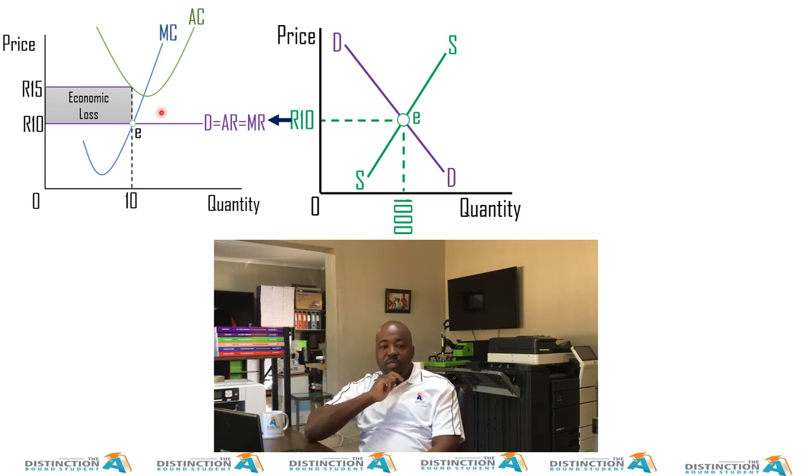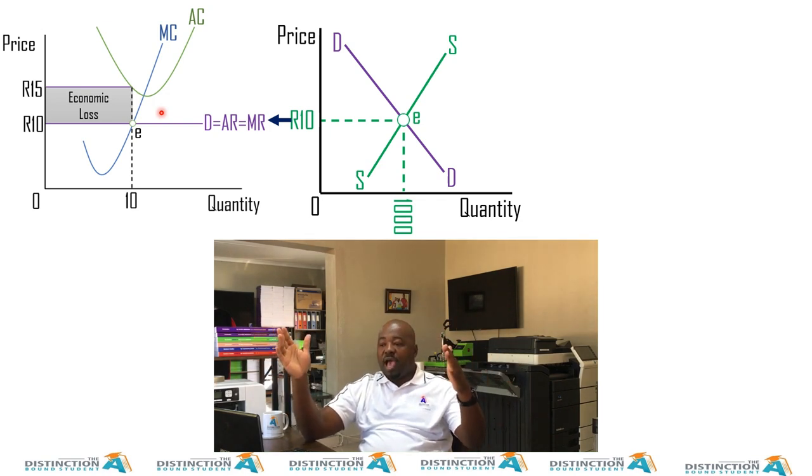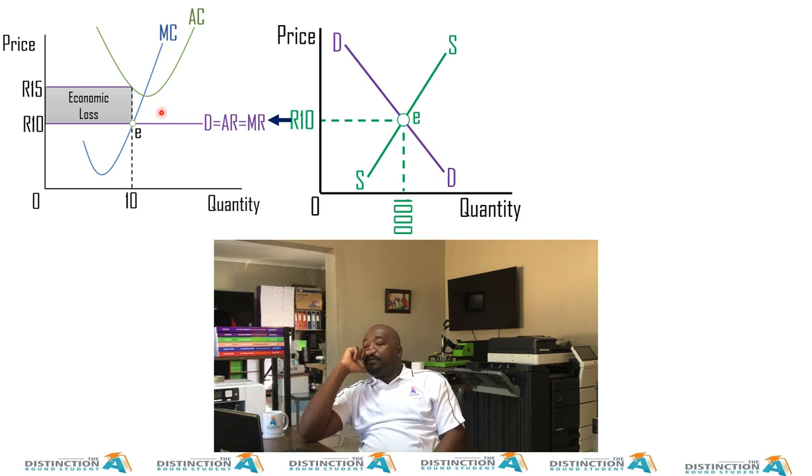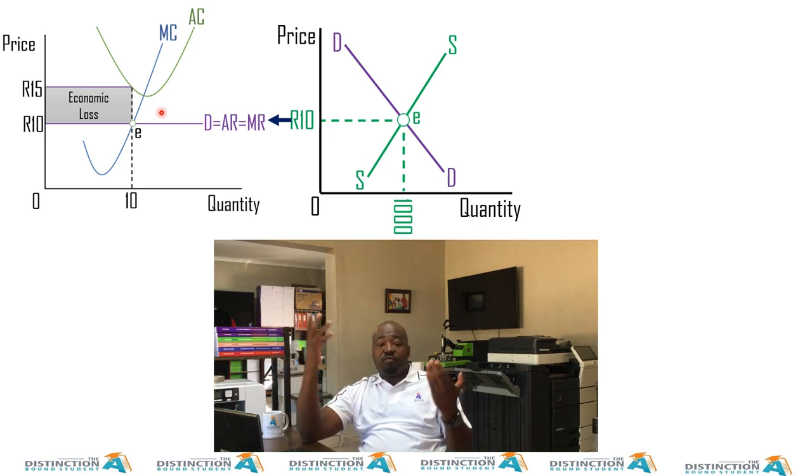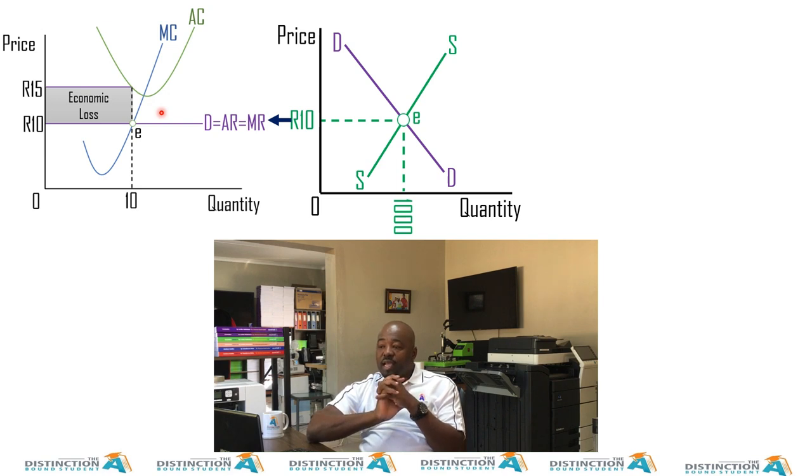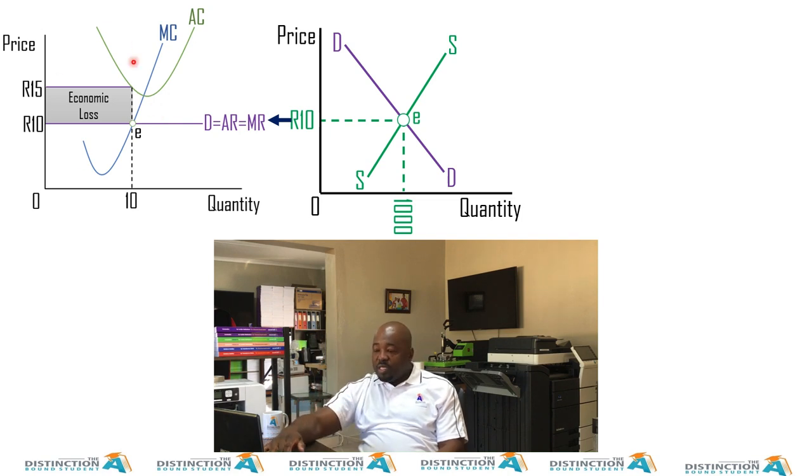We want to see what happens in the long run. I want you to think as we go through the lesson. What do you think would happen if firms in this industry are making an economic loss, and it being caused by the price that forces of demand and supply are intersecting at 10 rand?